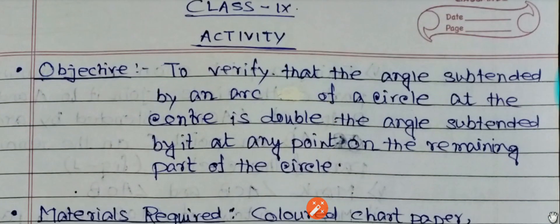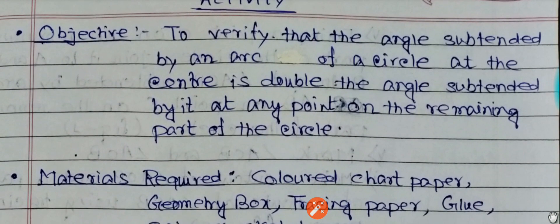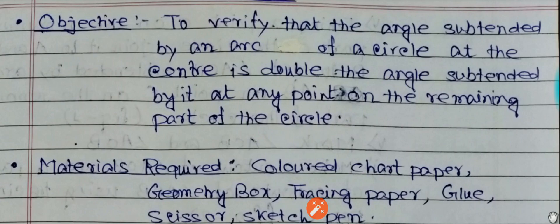Hello and welcome. Today we are going to verify one activity from class 9 which states that the angle subtended by an arc at the center of a circle is double the angle subtended by it at any point on the remaining part of the circle.